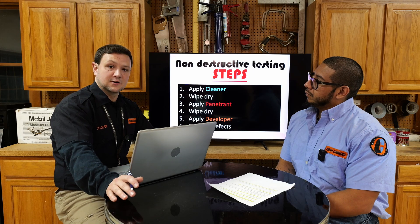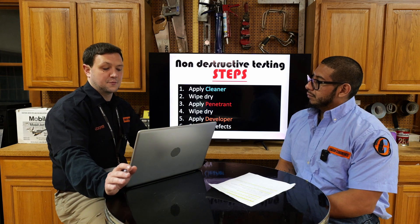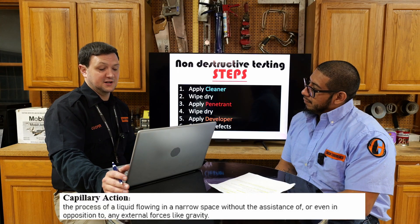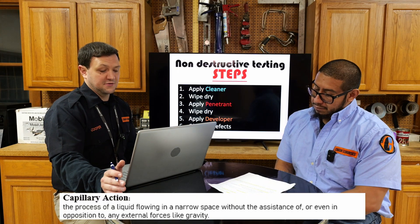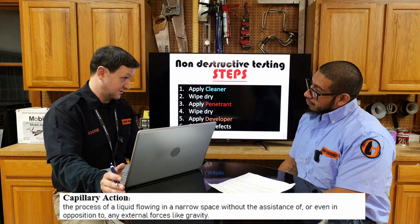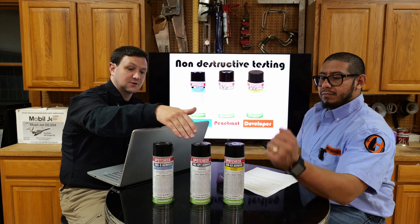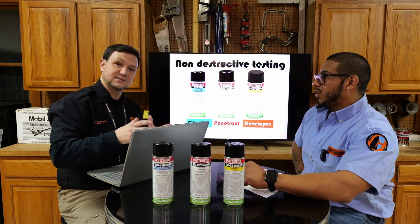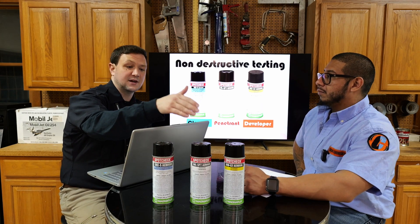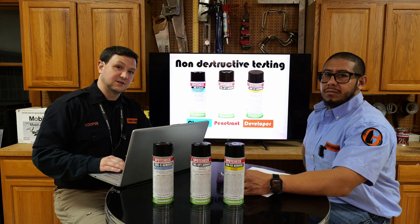We're going to start off with the dye penetrant inspection, but before we get into that let's talk about an important term called capillary attraction. Capillary attraction means the process of a liquid flowing in a narrow space without the assistance or opposition of any external forces like gravity. First we'll use our cleaner, then our liquid penetrant to penetrate inside the crack or defect, and finally the developer will pull that penetrant out through capillary attraction.